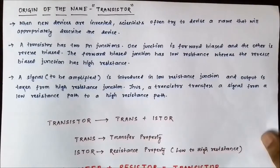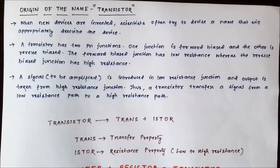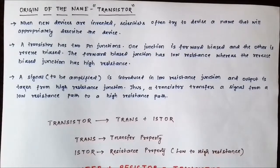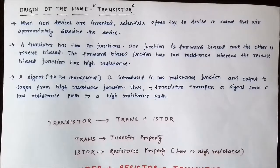Whenever a new electronic device is invented, scientists try to devise a name which accurately describes the characteristics of the device — the unique feature, what purpose or service it provides, and what unique traits it possesses. Depending upon that, a suitable name is assigned to the new electronic device.